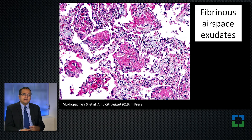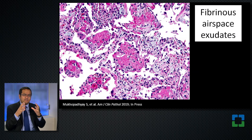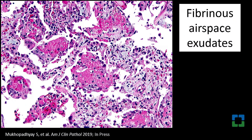Another finding in some cases was the presence of fibrin or fibrinous exudates within the alveoli. Within the lumen of the alveolus were these fibrinous exudates — pink little blobs seen within the airspaces.